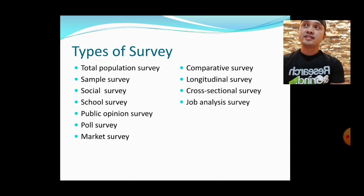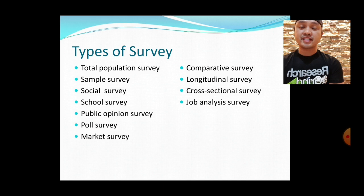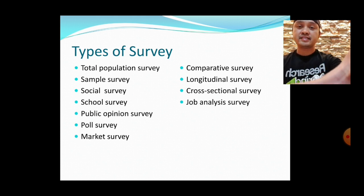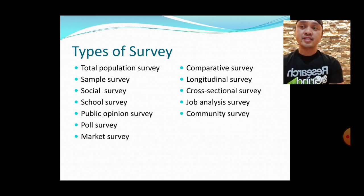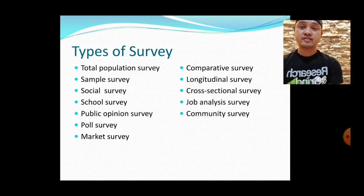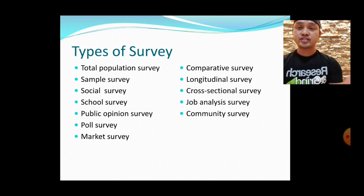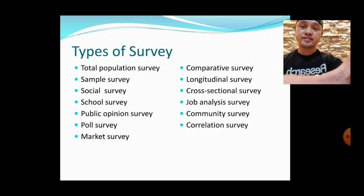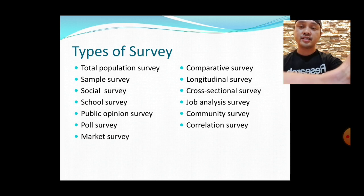A job analysis survey involves analyzing employee satisfaction or evaluating employee performance in an organization. A community survey is commonly done by nurses through community organizing participatory action research, where the goal is to assess the community's health situation and then provide an action plan based on the survey results. A correlational survey, the most popular type, involves the relationship between X and Y variables, which will be discussed further later.